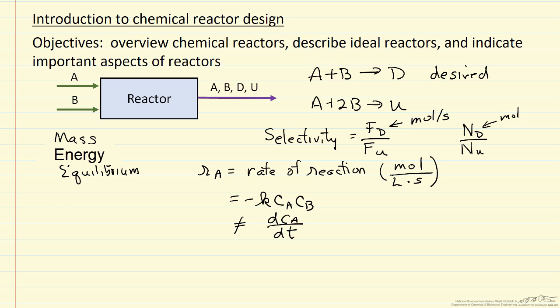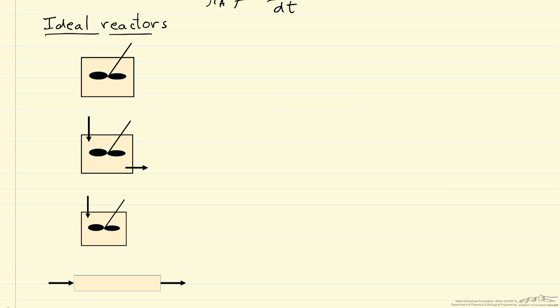Let's look at types of ideal reactors that we're going to most commonly use. Sometimes these are good representations of real reactors. Sometimes real reactors are a combination of ideal reactors. I'm showing here four types of ideal reactors.